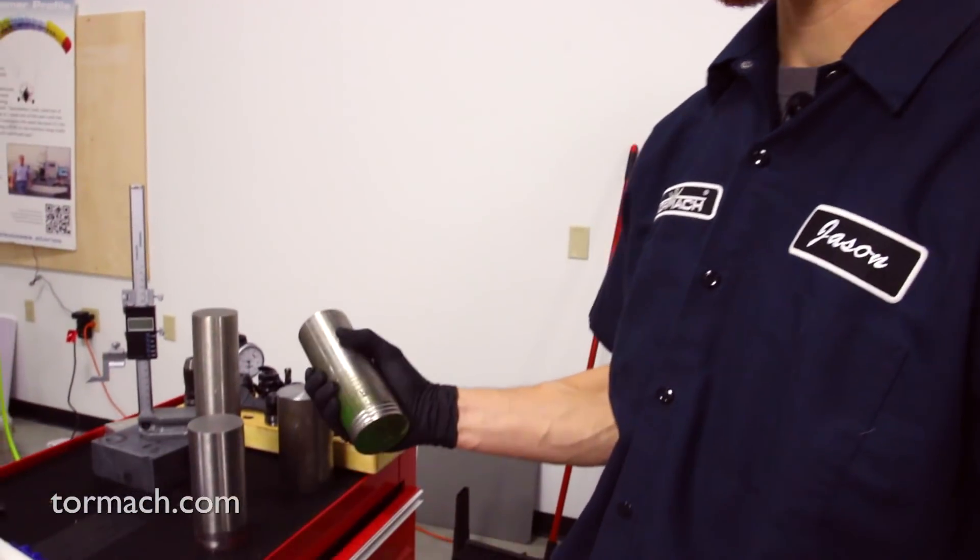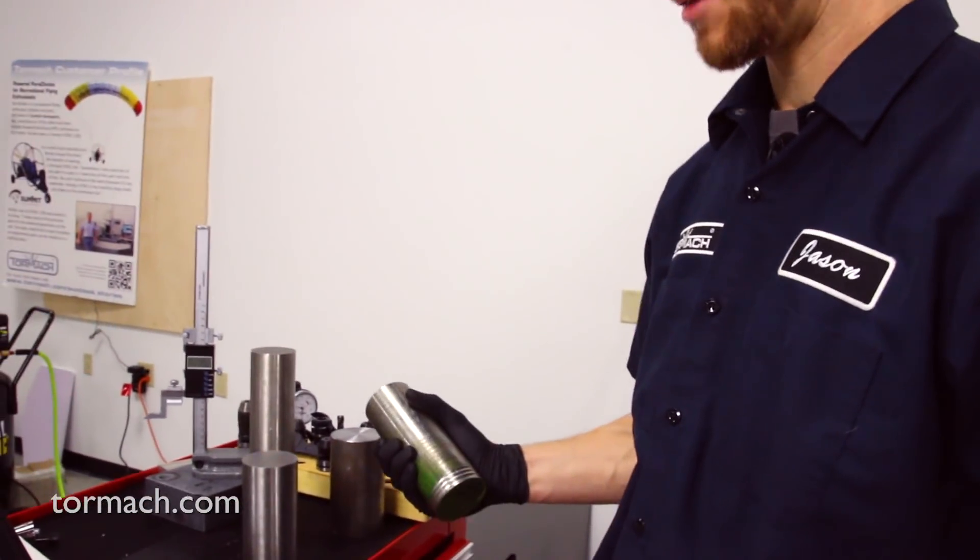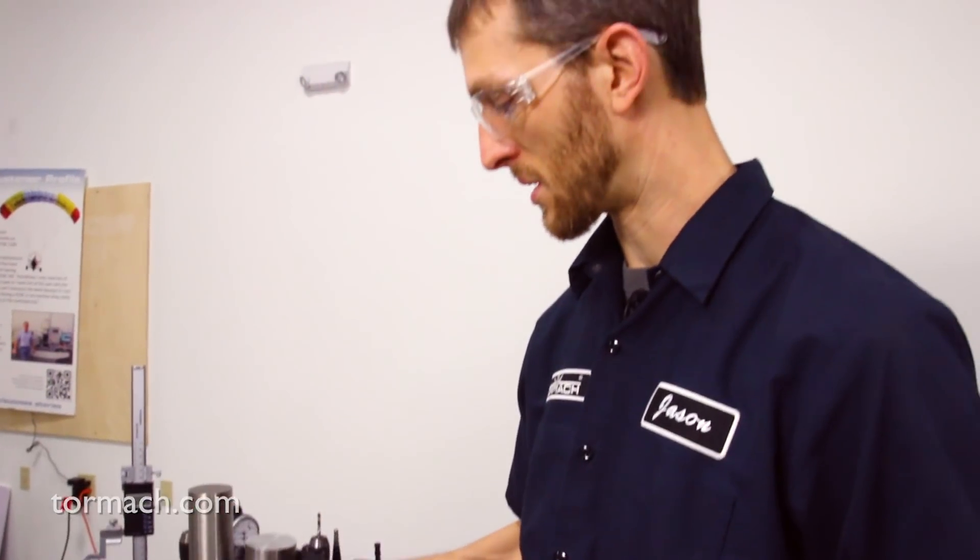And the last thing you can do is a quick check of what the material weighs. If it's aluminum it's always going to be very light. Titanium is pretty easy to identify by weight because it looks like steel but when you pick it up it's nice and light.